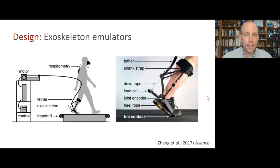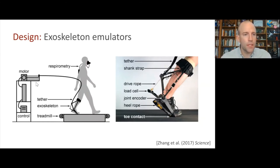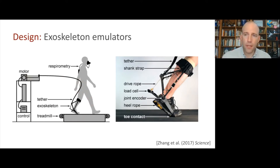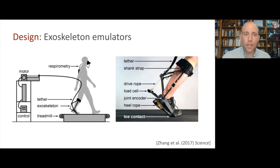More recently, my laboratory is focused on tools for designing exoskeletons and prosthetic limbs. We call these things emulators. This is a typical system — there's a big motor and controller that's tethered to lightweight instrumented components worn on the body. That way, you can give the user lots of experience interacting with many different candidate designs without having to build them in hardware, which is very cumbersome.